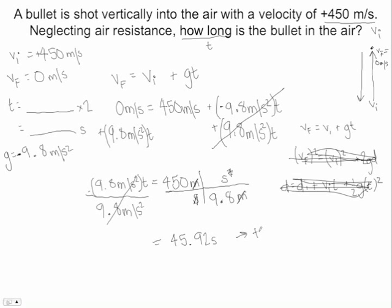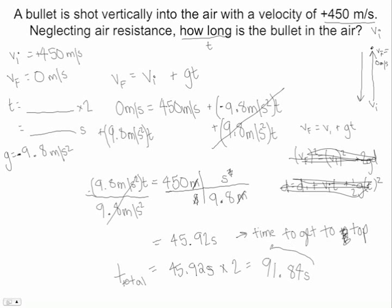And then we get a time of 45.92 seconds. Now remember, this is the time to get to the top. So in order to get the total time, which is really what we need, we have to multiply that 45.92 seconds by 2, which gives you 91.84 seconds. And this is our total time. So this one was a little more difficult, because we had to realize that our final velocity was 0, because it was at the very top. And then we also had to take our answer and multiply that by 2.